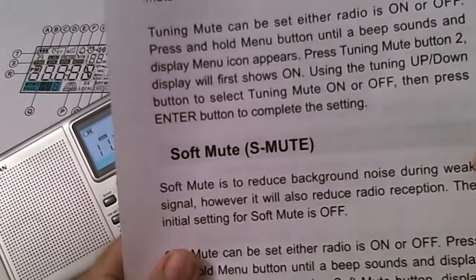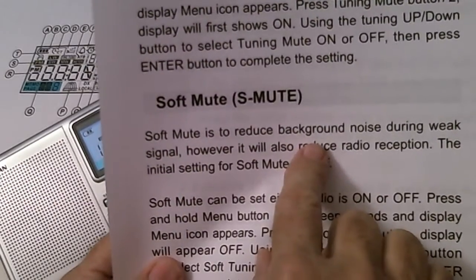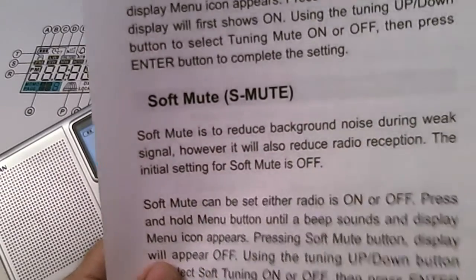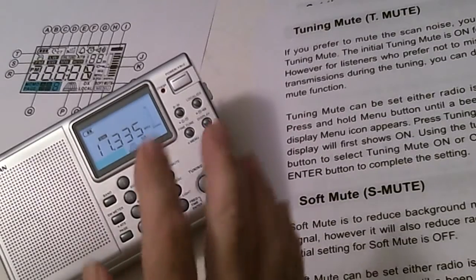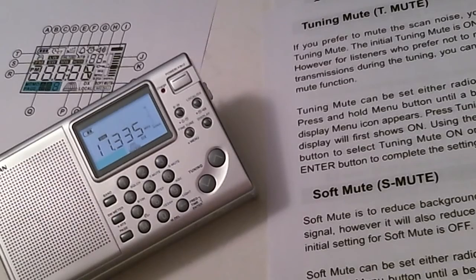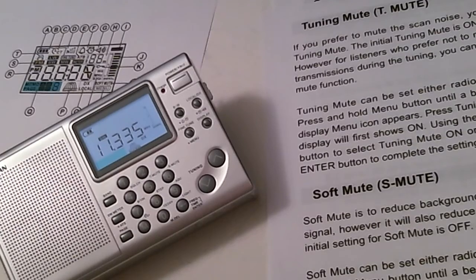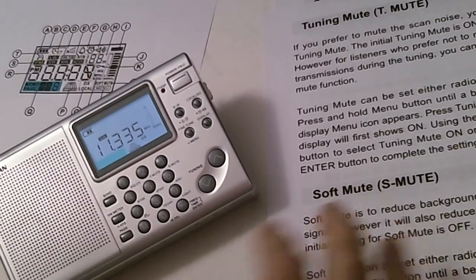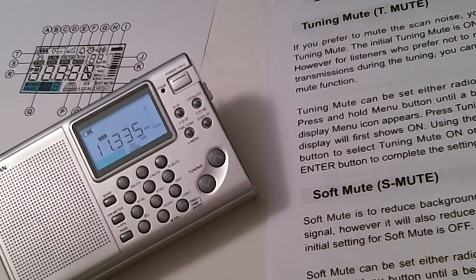Next one is soft mute. And this is to reduce background noise during weak signals. And what these newer radios try to do that have a DSP, digital signal processor, is the attempt to automatically mute the audio when the background noise level is reduced. And to me, it doesn't work. To me, it makes it worse. Because what happens is if you get a weak signal, this signal is trying to do this automatic squelching, soft muting function.